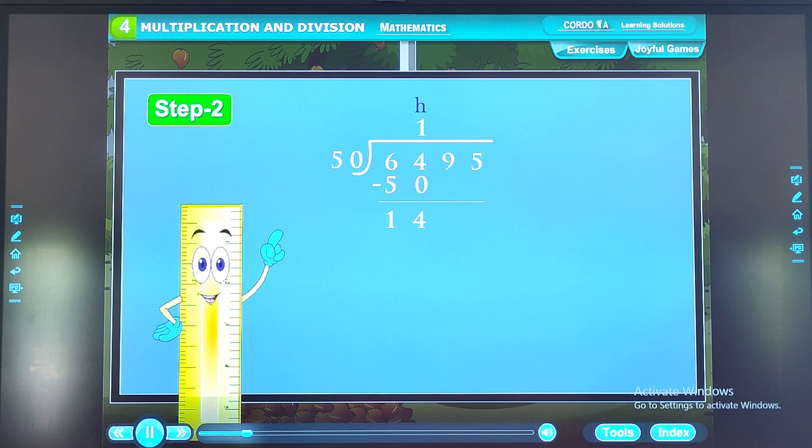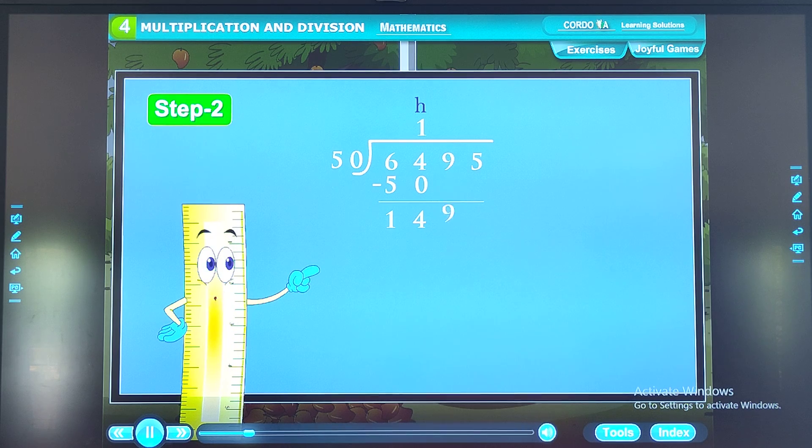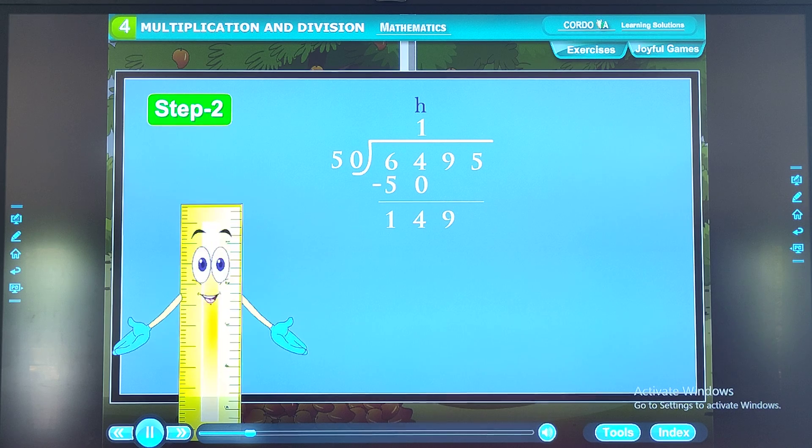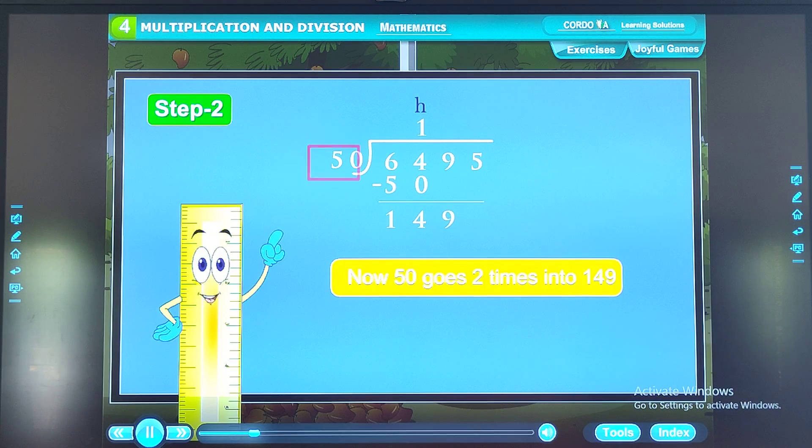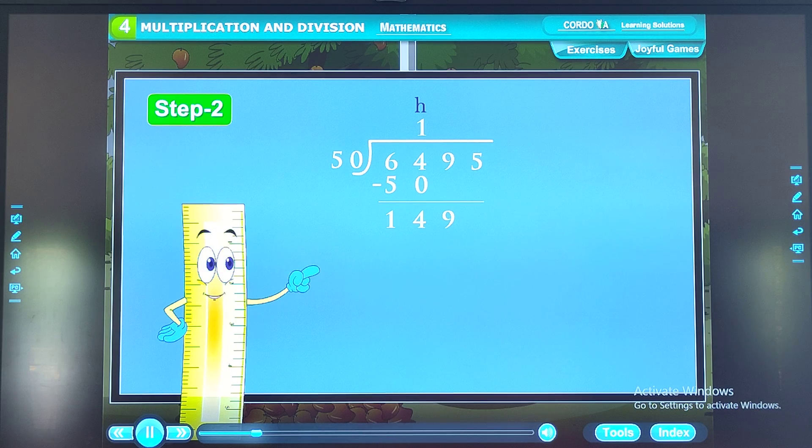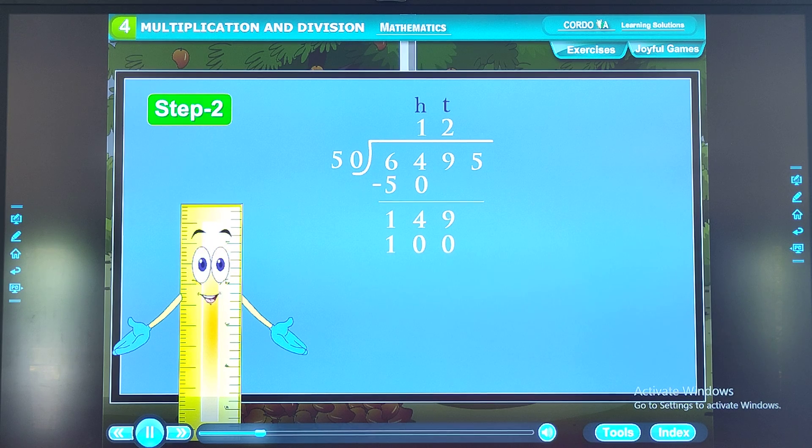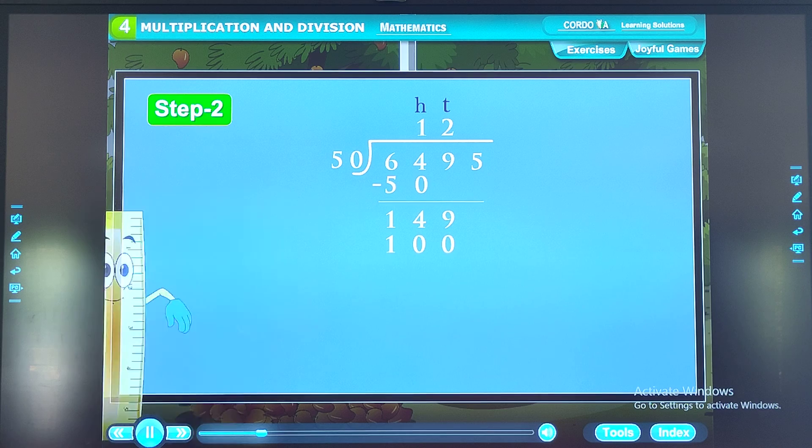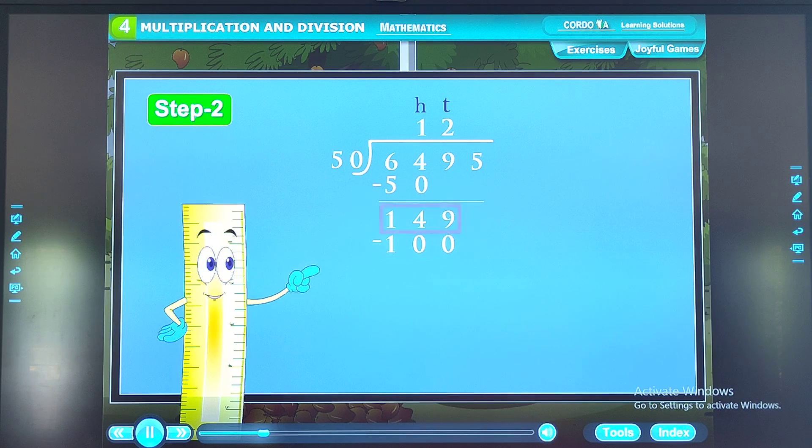Step 2. Now we bring down 9 tens from the dividend to the right of the 14, making 149 tens. Now 50 goes 2 times into 149. So we write 2 in the tens place in quotient and write 100 below 149. On subtracting 100 from 149, we get 49.